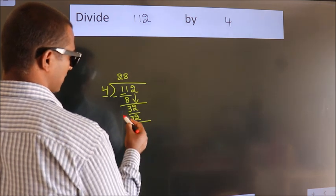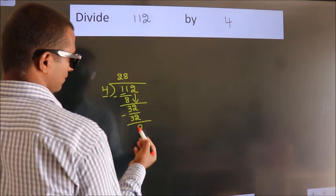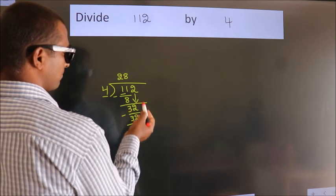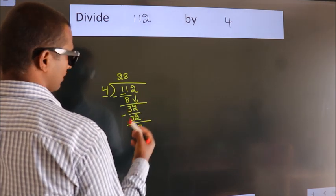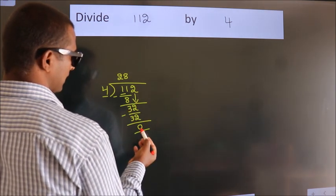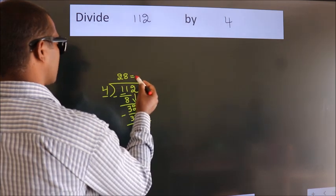Now we subtract. We get 0. After this, no more numbers to bring down. And we got remainder 0. So this is our quotient.